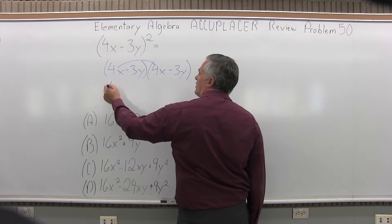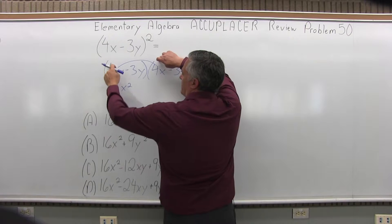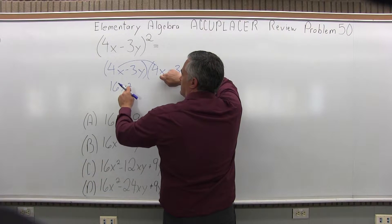So 4x times 4x will be 16x squared. The 4 times 4 makes the 16, x times x is x squared.